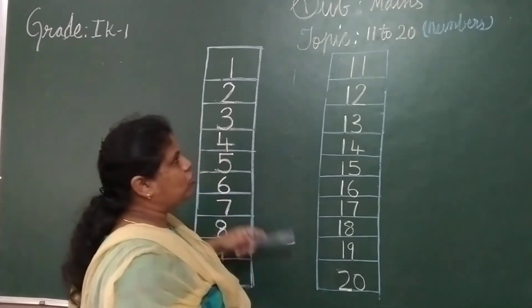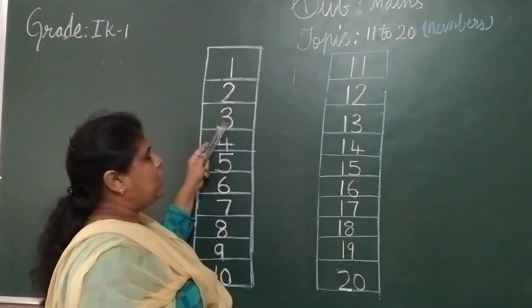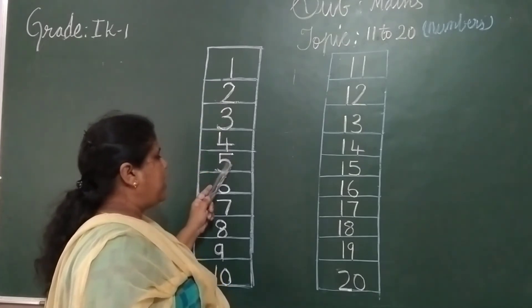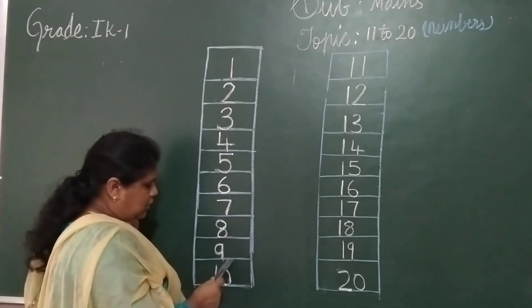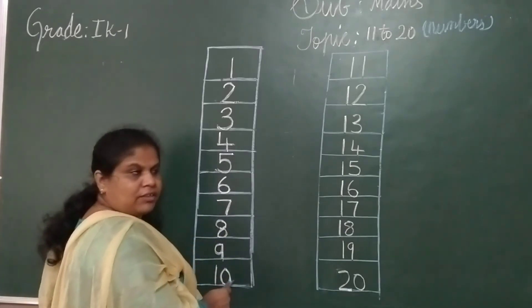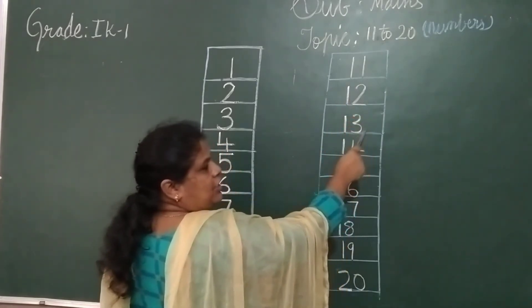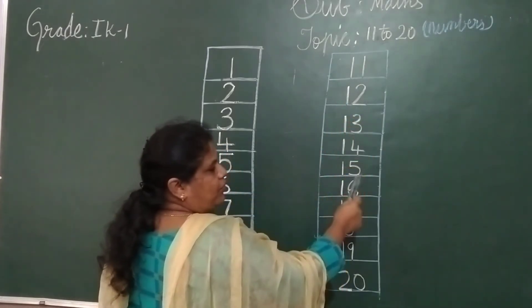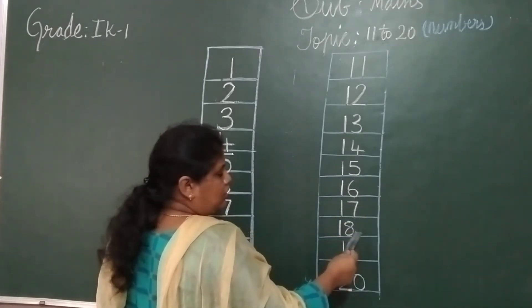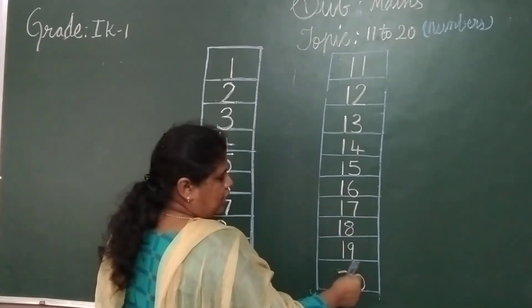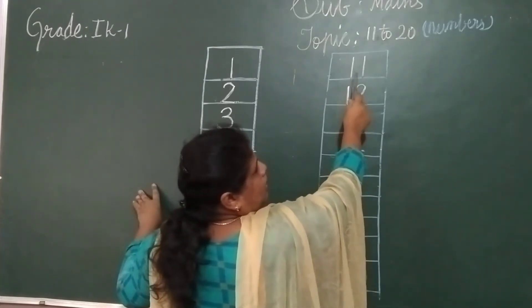Once again from 1 to 20: 1, 2, 3, 4, 5, 6, 7, 8, 9, 10, 11, 12, 13, 14, 15, 16, 17, 18, 19, 20.